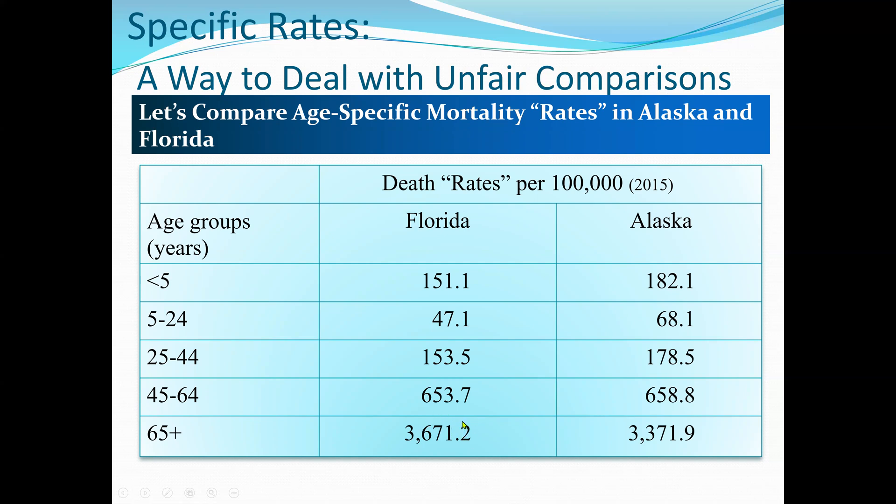Comparing age-specific mortality rates in Alaska and Florida presents a problem: it is cumbersome to compare five pairs of numbers, and it is not entirely clear which state has the higher mortality. For example, one age-specific rate is higher in Florida — among those 65 and over — while four age-specific rates are higher in Alaska. The solution is to create a single summary number for each state that adjusts for age differences. This leads us to adjusted rates.